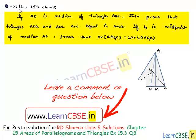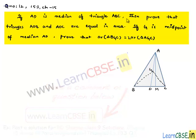Let us solve question number 12 from exercise 15.3, chapter 15. If AD is the median of triangle ABC, prove that triangles ADB and ADC are equal in area. If G is the midpoint of median AD, prove that area of triangle BGC is equal to 2 times area of triangle AGC.